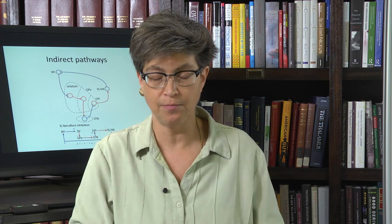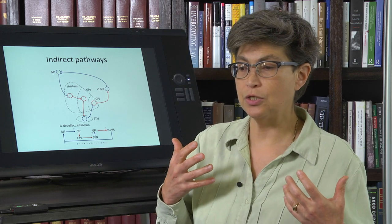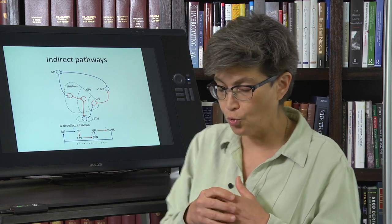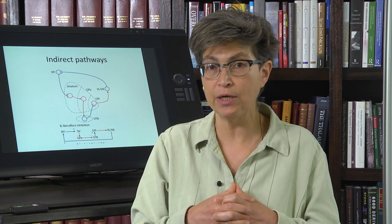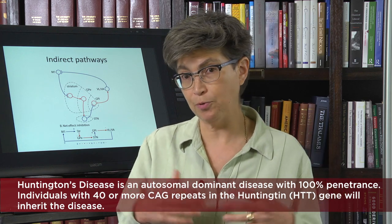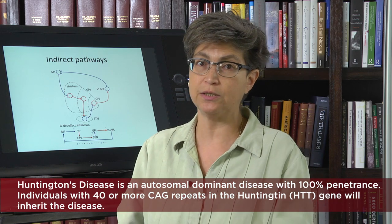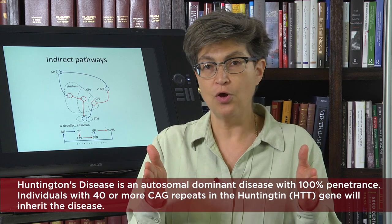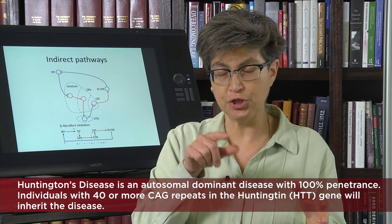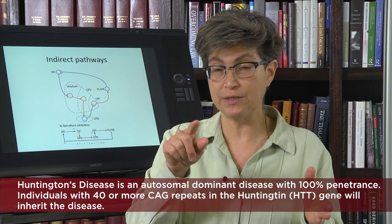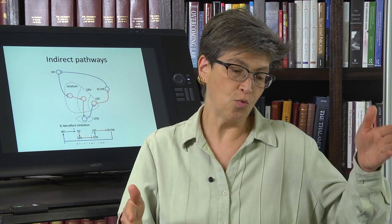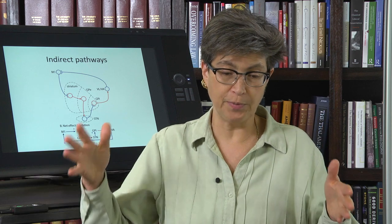There are many other ways to get to the same outcome. The second disease which highlights the workings of the indirect pathway is called Huntington's disease. Huntington's disease is relatively rare. It is an autosomal dominant disease with 100% penetrance — when people are learning genetics and they want to understand penetrance, they go to Huntington's. If a person has more than 40 CAG repeats in the huntingtin gene — the gene is huntingtin with a T-I-N, the disease is Huntington's with a T-O-N — the person will develop the disease.